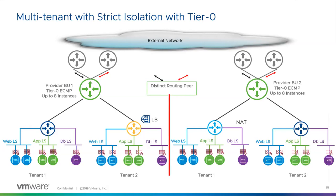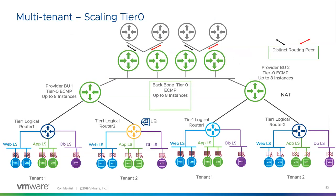My favorite is the craziest design of all — where we have a backbone of eight-ECMP-connected tier zeros. The sheer amount of separation and connectivity that you can provide, all done in software — this is truly next-level stuff.